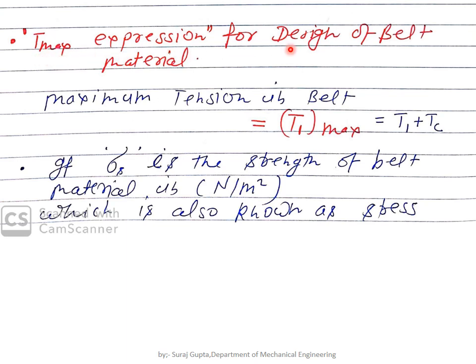The maximum tension T_max is the expression for the design of belt material. As seen in the previous lecture, the maximum tension in the belt can be T1_max or T2_max, but T1_max is greater because T1 is more than T2. So T1 plus Tc equals T1_max, which is the maximum tension generated inside the material of the belt.